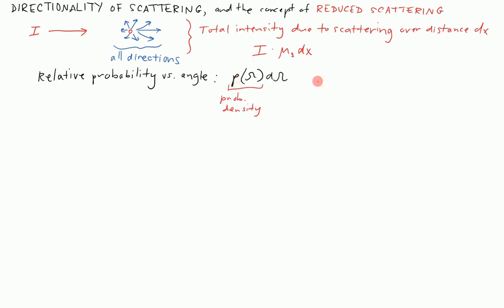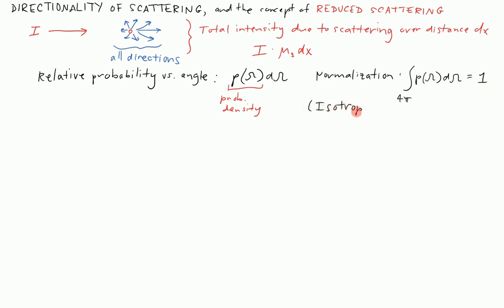We have a normalization: the probability has to scatter somewhere, because we're already talking about a scattering event. So if we integrate P over all 4π steradians, we must get 1. For the isotropic case — scattering equally likely in any direction — the probability density has no dependence on direction and has a magnitude of 1 over 4π. Integrating 1/4π over all solid angle gives 1/4π times 4π steradians, which equals 1, as expected.